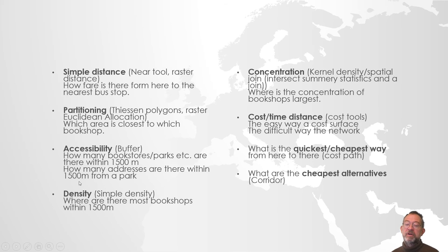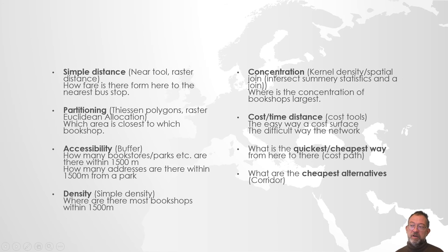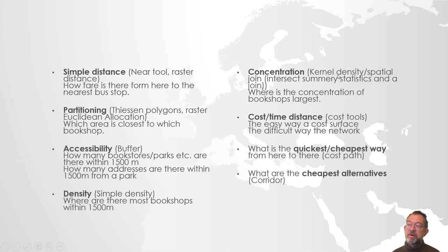Then we will talk about density — how many bookshops, stations, or other features are within 1 kilometer or 1500 meters. Density has a cousin called concentration: where is the concentration of addresses or stations the highest? The tool for concentration is called kernel density, and the tool for normal density is called point density. There are very important differences in how they work, so we will treat them as two distinct concepts.